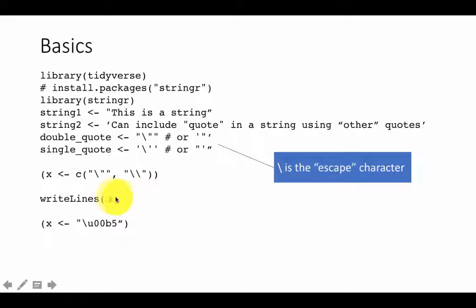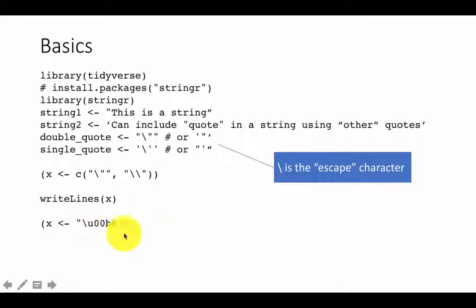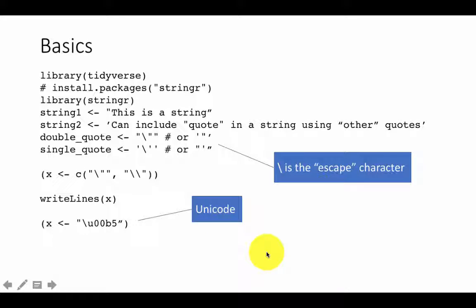If you do writeLines(x), it prints the contents of the vector. You can also include special characters like the Greek character mu, which doesn't appear on our keyboards, by using its Unicode code point. For example, the Unicode for Greek mu is backslash-u00b5. If you print the character x with that code, you will see the Greek character mu.